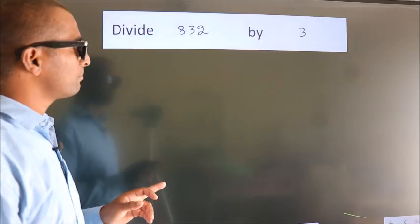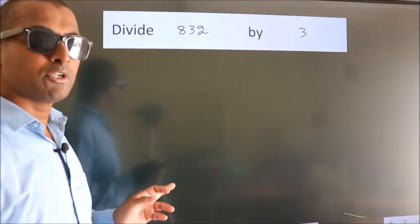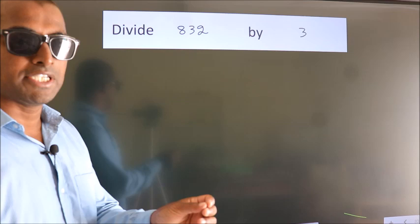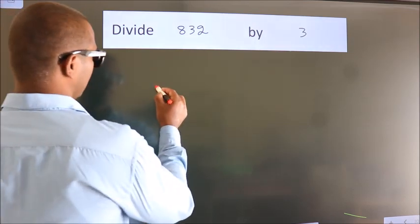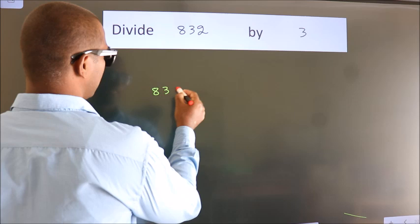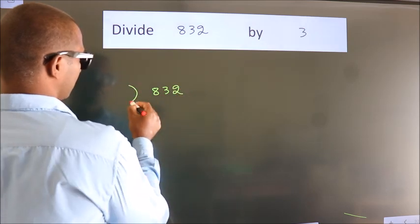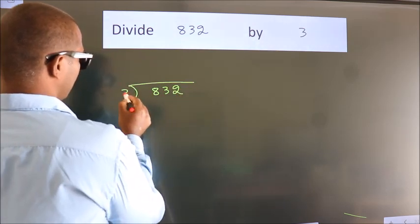Divide 832 by 3. To do this division, we should frame it in this way: 832 here, 3 here.